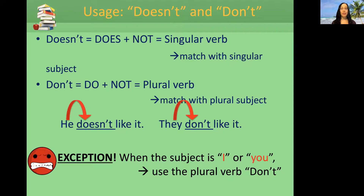There is an exception. When the subject is 'I' or 'you,' we use the plural verb 'don't.' 'I don't like it.' 'You don't like it.' Let's repeat: 'I don't like it.' Great. 'You don't like it.'